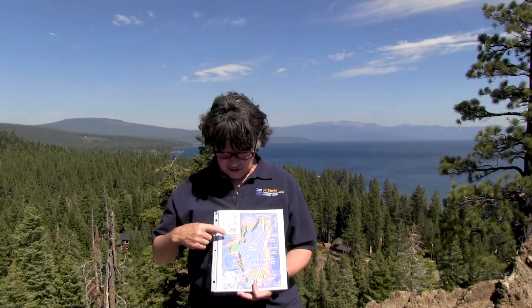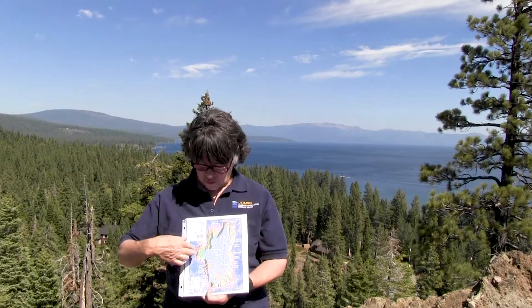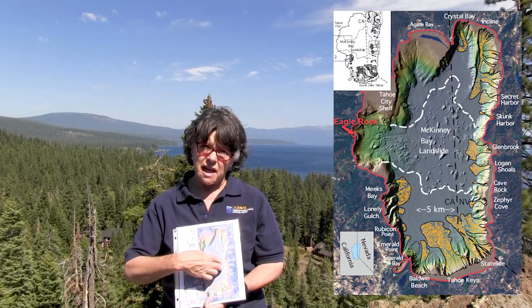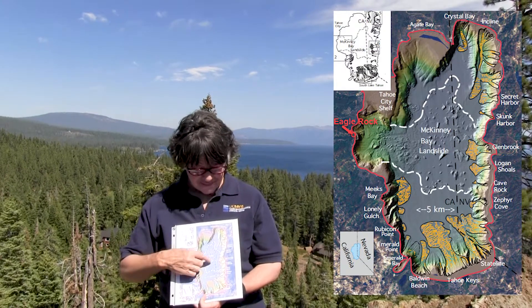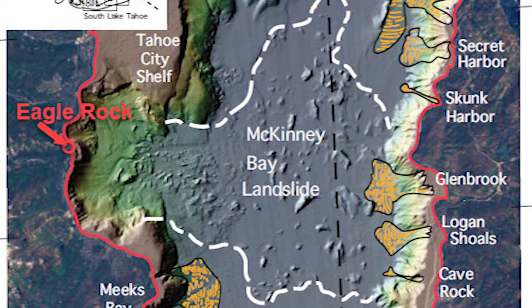Faulting along the Tahoe Sierra Frontal Fault Zone is also responsible for a large-scale collapse event along the west shore of Lake Tahoe. A large earthquake caused nearly three cubic miles of material to come out of what is now McKinney Bay and flow across the bottom of the lake about nine miles. It carried mile-sized blocks, and you can see some of them here.